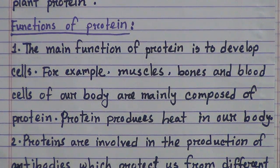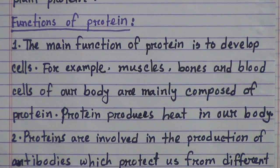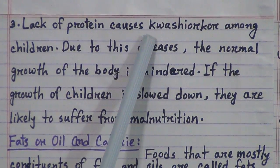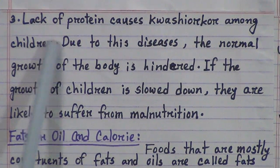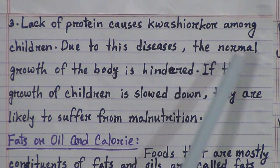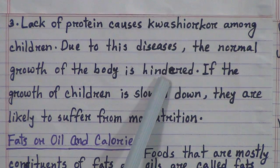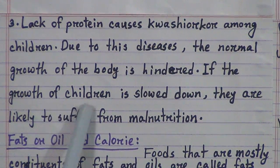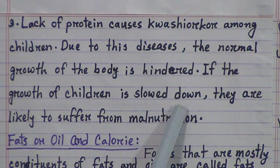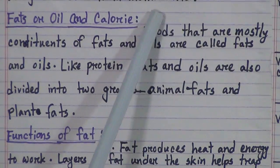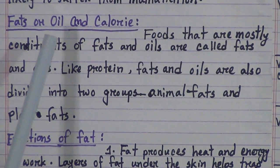Number 3, lack of protein causes kwashiorkor among children. This is very important. Due to this disease, the normal growth of the body is hindered, and if the growth of children is slowed down, they are likely to suffer from malnutrition.